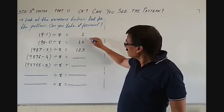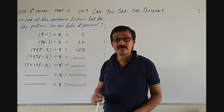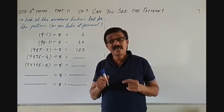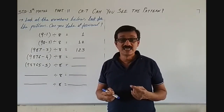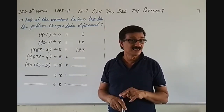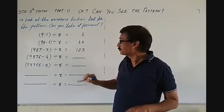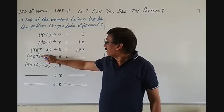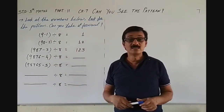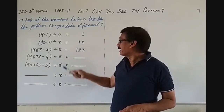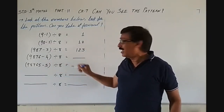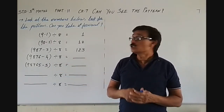Now, they have given us the answers also. See: 9 minus 1 is 8; 8 divided by 8 is 1. Then 98 minus 2, that is 96. 96 divided by 8 is 12. Then 987 minus 3, that is 984. 984 divided by 8 is 123. But from this, we have to solve this one. So let's go for that.